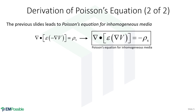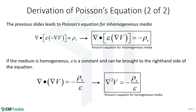By inhomogeneous, the permittivity could be a function of position. What if the permittivity is not a function of position — what if it is homogeneous, the same permittivity everywhere? At that point, it becomes a constant, it can be brought to the outside of the divergence operation and then to the right-hand side of the equation. So when we do that, we arrive at Poisson's equation for homogeneous media.